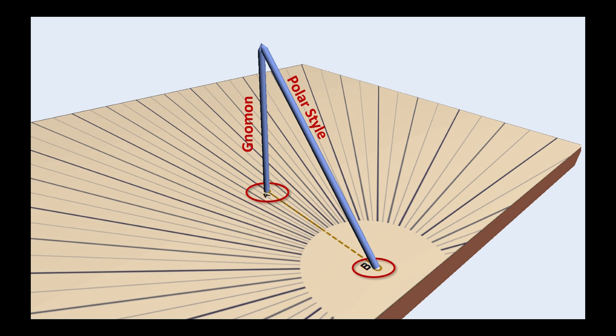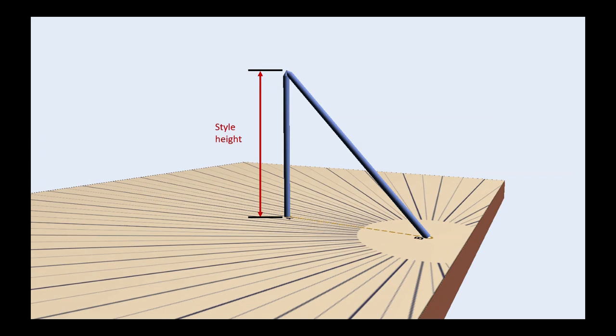In the case of a triangular style, its upper edge is the polar style. The junction of the gnomon and the polar style, called point C, is very important. It casts a shadow at a point that indicates other information than time, such as the date or other indications.